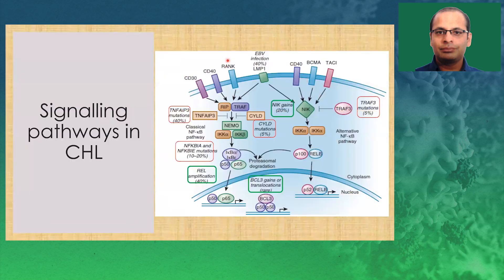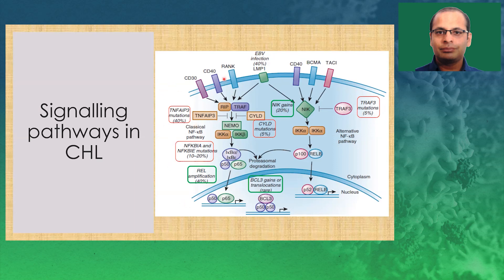Looking at the signaling pathway, this is predominantly mediated by CD30, CD40, and RANKL, as well as EBV infection, which occurs in almost 40% of cases. The most common pathway involves NEMO, IKK, and NF-κB. The genes commonly mutated include TNFAIP3, NF-κB1A and 1E mutations, and more importantly REL amplifications, seen in almost 90% of cases. Other less common mutations are NICA gains, CYLD mutations, and TRAF mutations. Importantly, this is commonly associated with chromosome 9p abnormalities, which have therapeutic relevance as checkpoint inhibitors are active in these mutations.